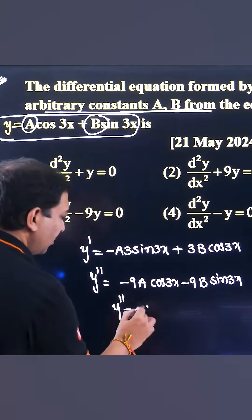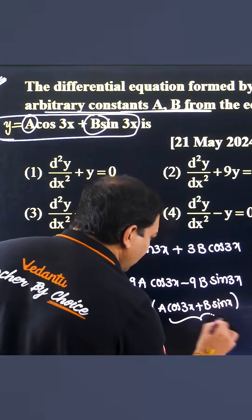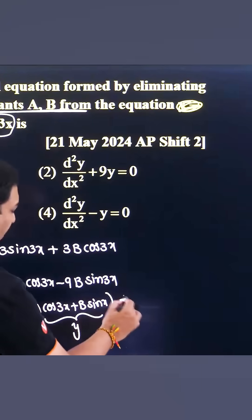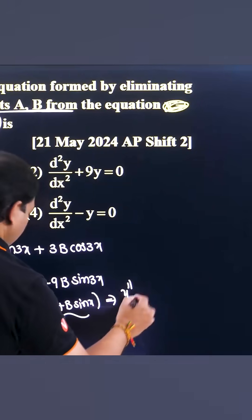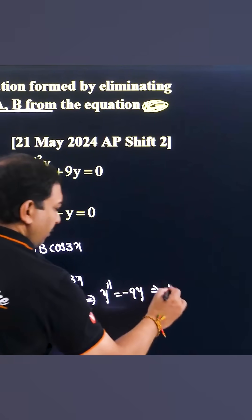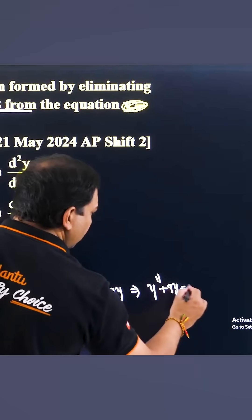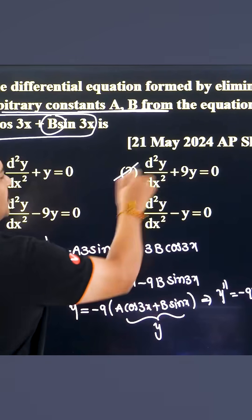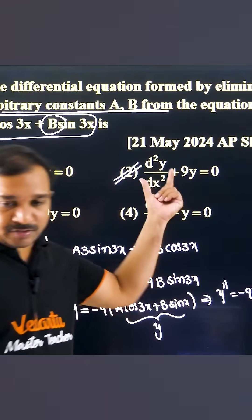Now, this is nothing but already y. So y double dash is equal to minus 9y, and therefore y double dash plus 9y is equal to 0. That is, d squared y by dx squared plus 9y equals 0.